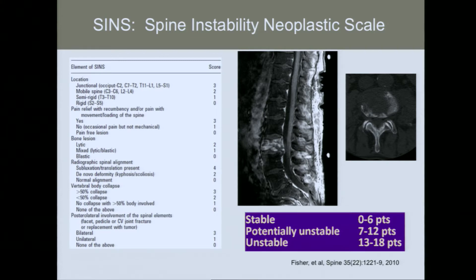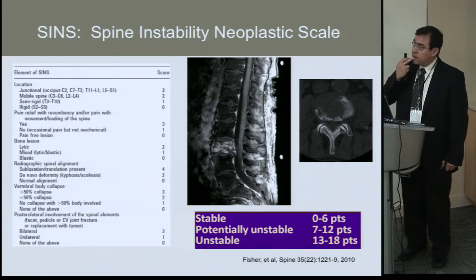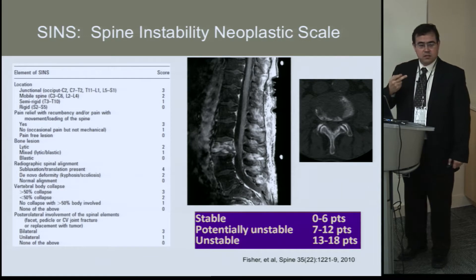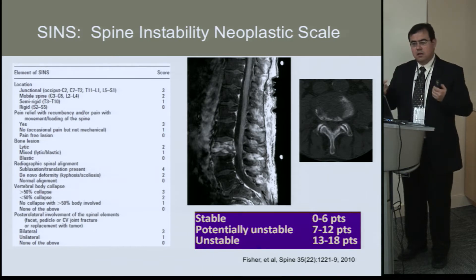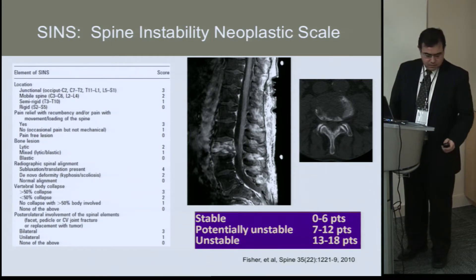Features of the tumors — like location, type of pain, whether the lesion was lytic or not, radiographic alignment, vertebral body collapse, and involvement of the posterior elements — were scored. According to this score, a lower score was considered stable by most specialists, an intermediate score was potentially unstable, and a higher score was unstable. This works somewhat like the Glasgow scoring system — it's a way to communicate with your oncologist or radiation oncologist and standardize the patient.